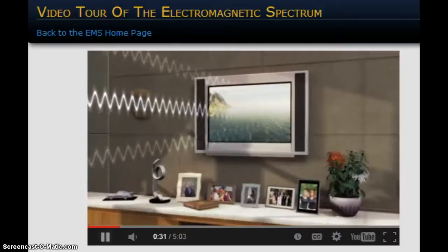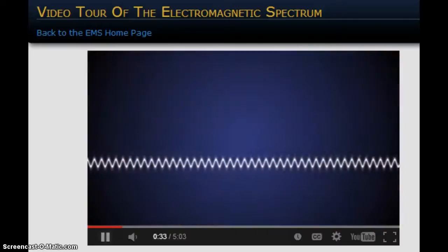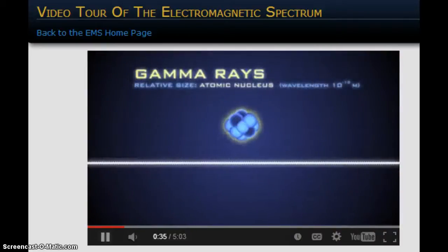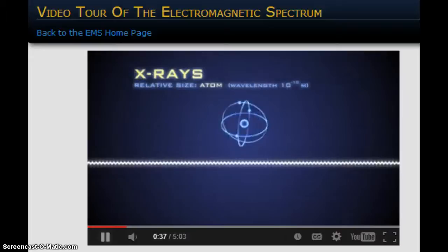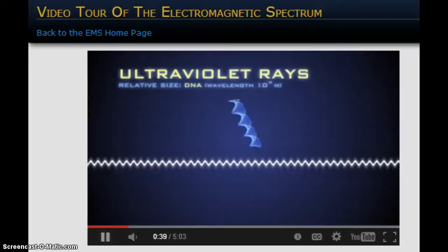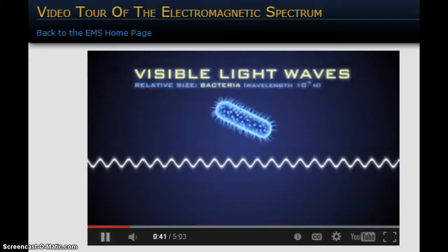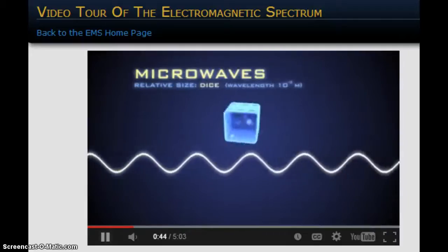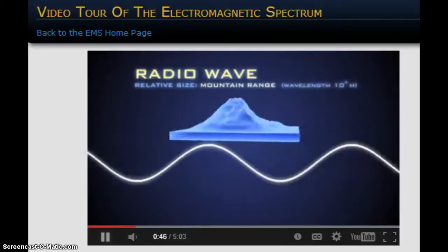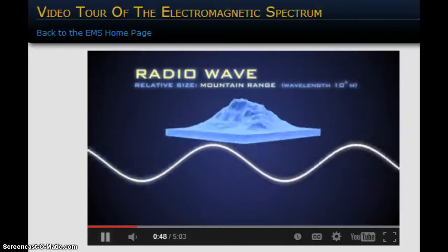Electromagnetic radiation. These waves spread across a spectrum from very short gamma rays to X-rays, ultraviolet rays, visible light waves, even longer infrared waves, microwaves, to radio waves which can measure longer than a mountain range.